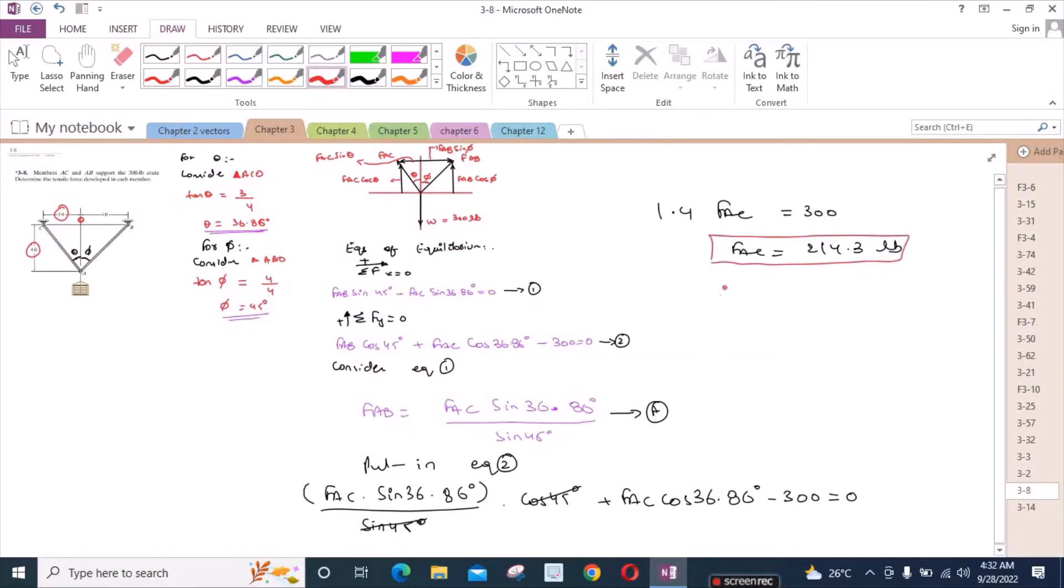If we put it in equation A, then FAB is equal to 214.3 times sin 36.86 degrees divided by sin 45 degrees. So FAB is equal to 181.8 pounds.